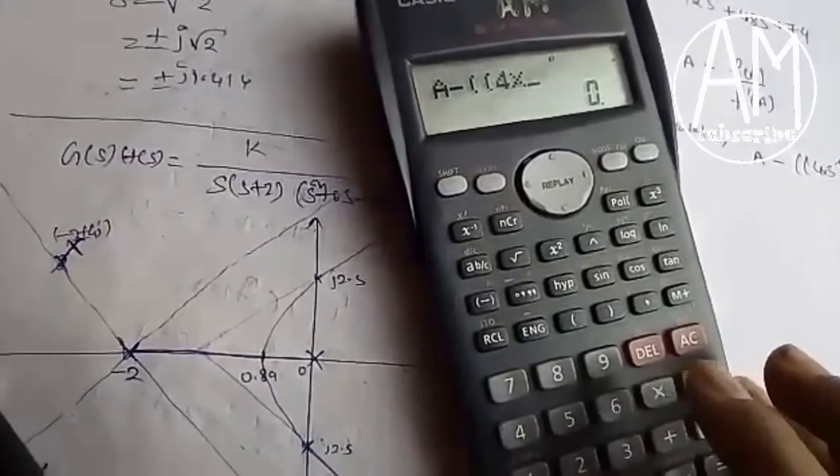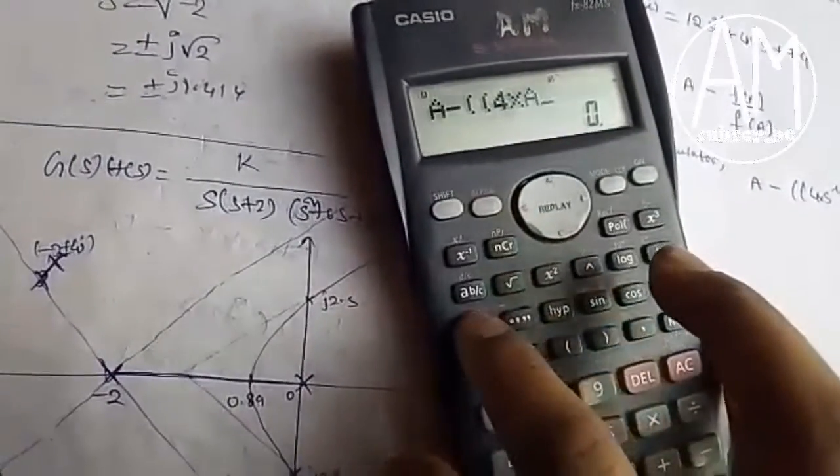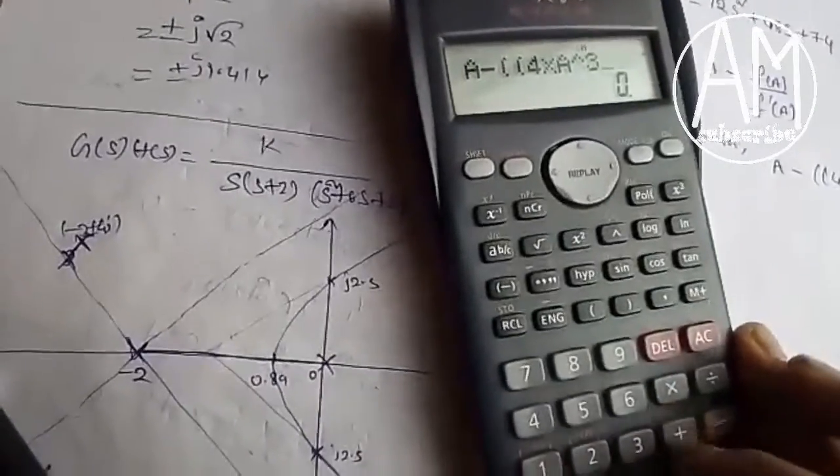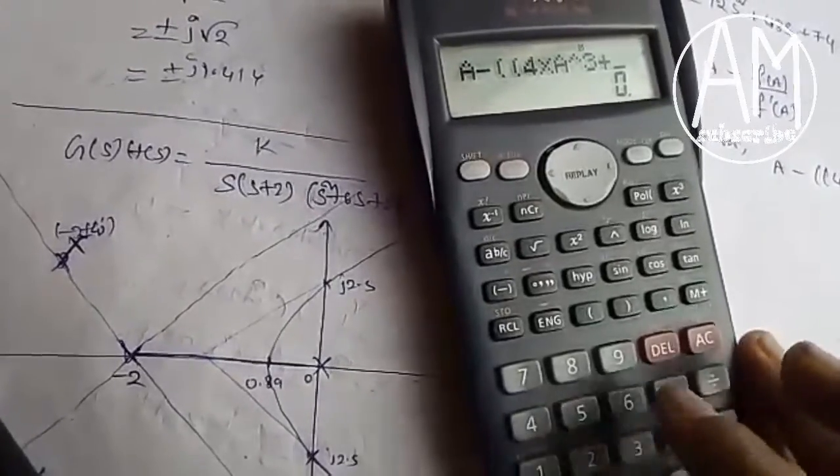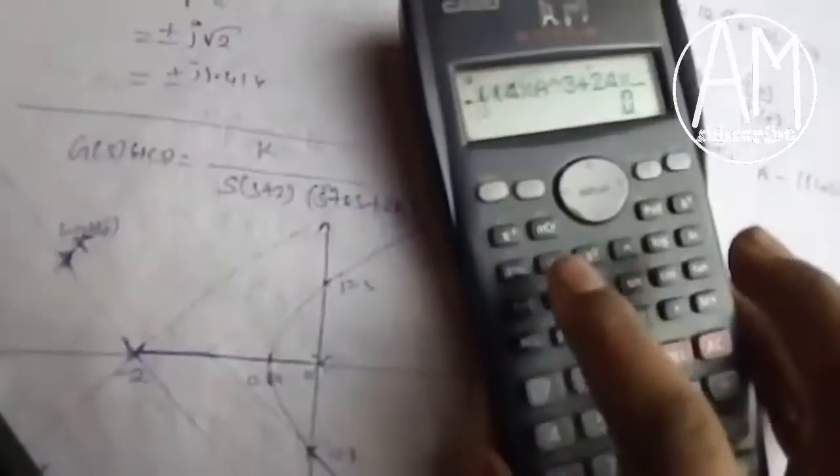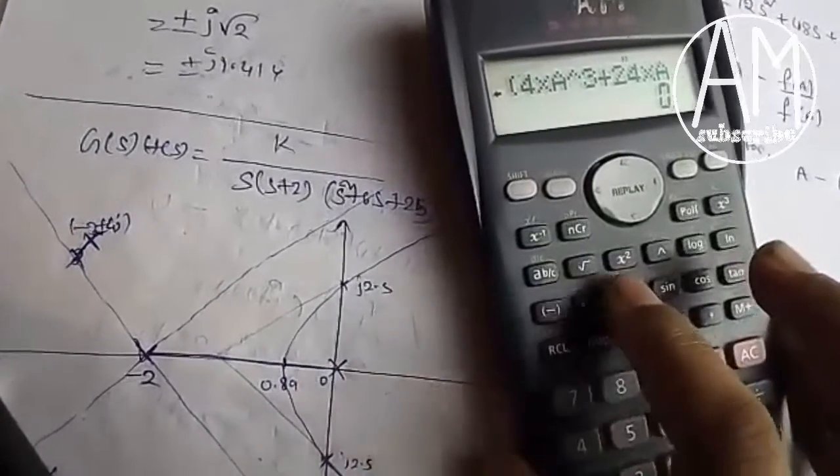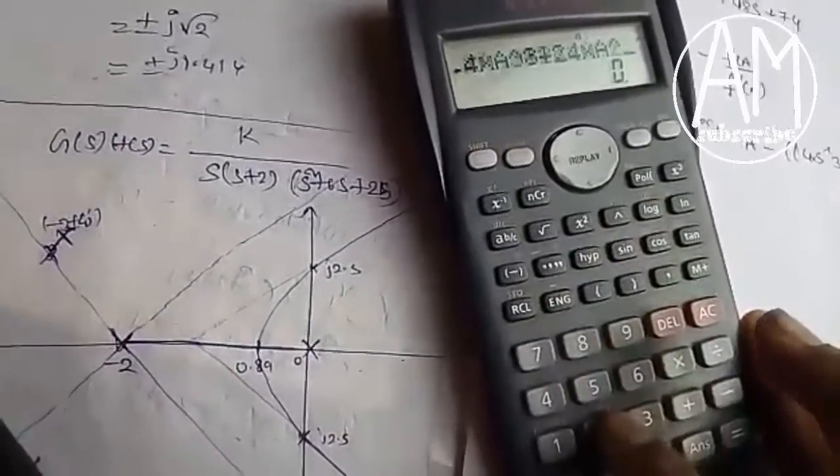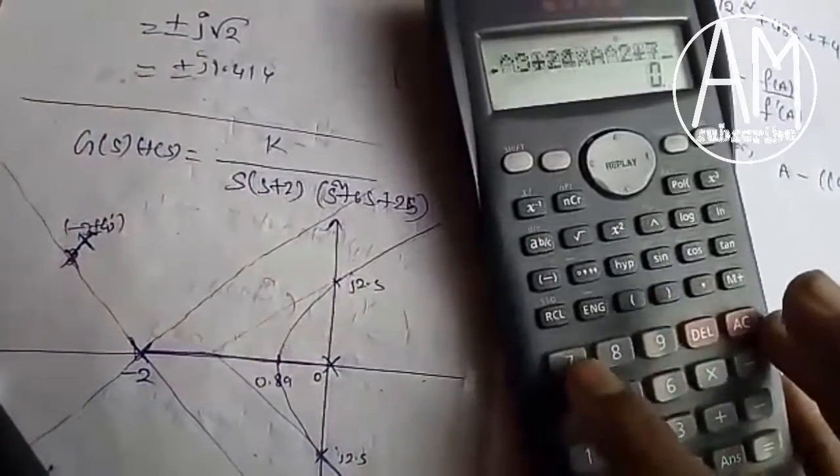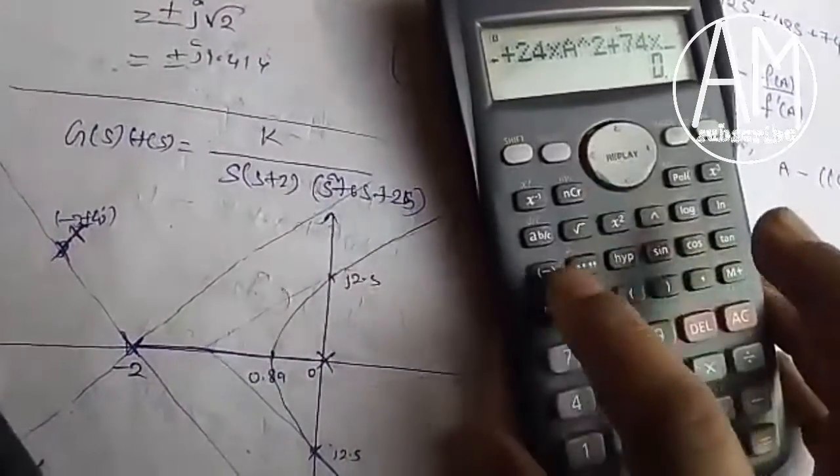Continue entering: A to the power 3 plus 24 into A to the power 2 plus 74 into A.